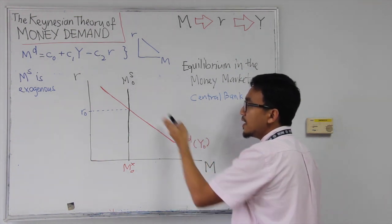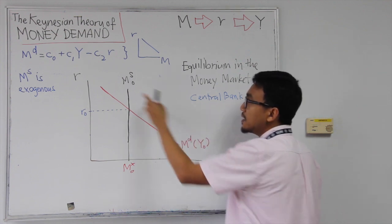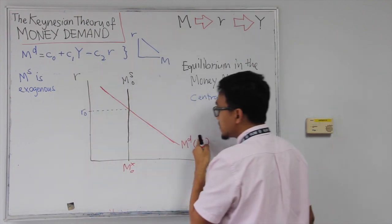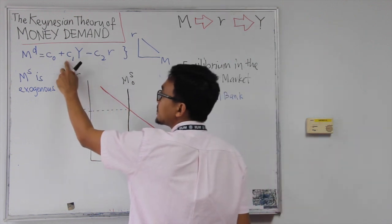So basically we will have to draw different demand for money for a different level of income. If income goes up, we know that if income goes up, then that will shift the demand curve for money up. Why? Because Y is positive.